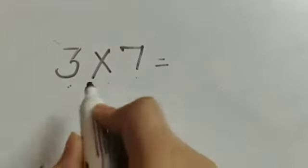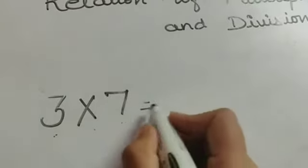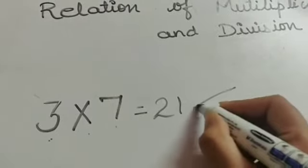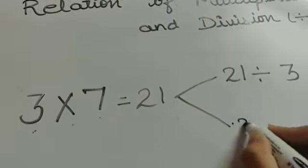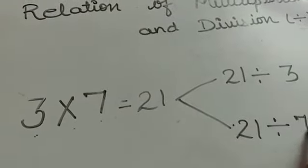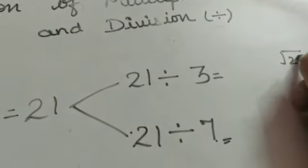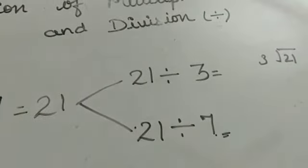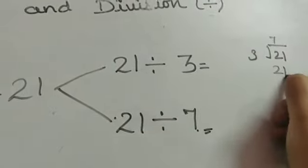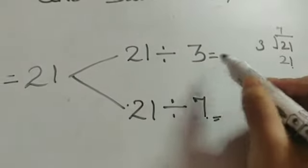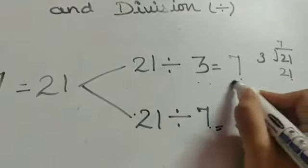3 into 7 is equals to 21. 3 ones are 3, 3 twos are 6, 3 threes are 9, 3 fours are 12, 3 fives are 15, 3 sixes are 18, 3 sevens are 21. So, 21 divided by 3 is equals to 7. If 21 is divided into 3 groups, each group has 7 objects.